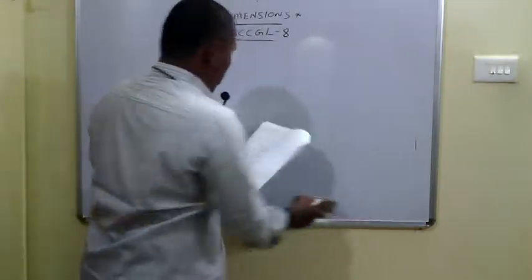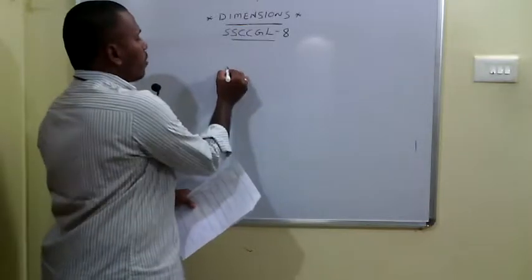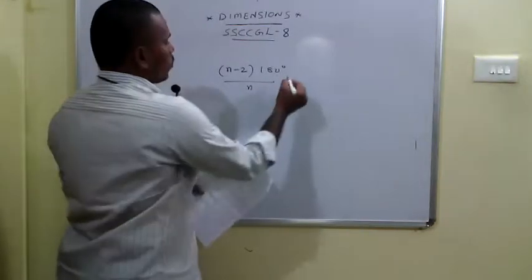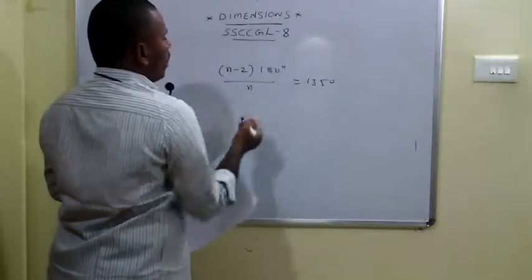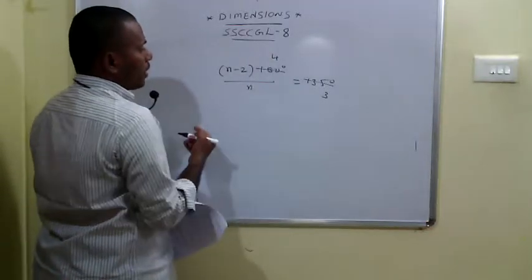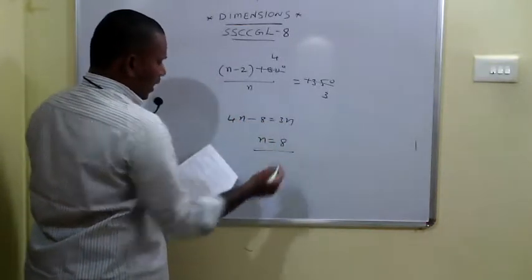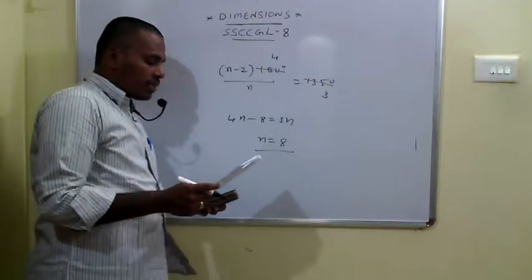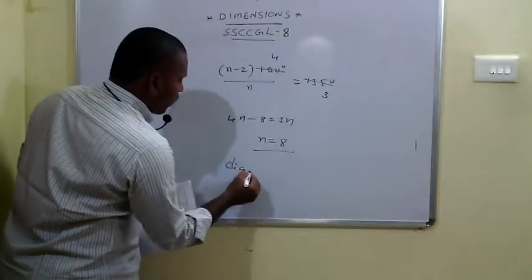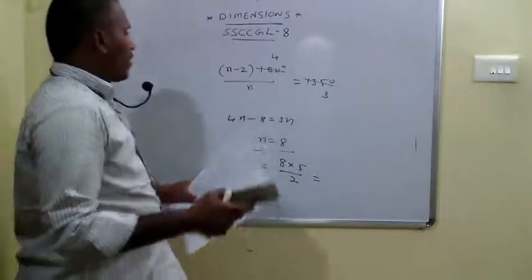The 62nd problem: each interior angle of a regular polygon is 135 degrees. The sum of angles is N minus 2 into 180, and each interior angle is that divided by N. Setting this equal to 135 and solving: 4N minus 8 equals 3N, giving N equals 8. They ask for the number of diagonals, which is N into N minus 3 by 2. For N equals 8, the number of diagonals is 8 into 5 by 2, which equals 20.